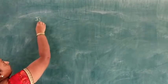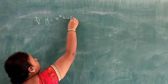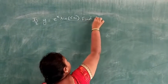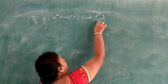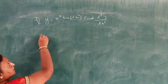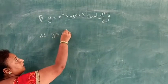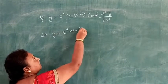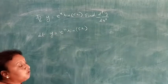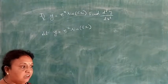Next problem: if y equals 2 e to the power x into sin 5x, find d squared y by dx squared. The given function y equals 2 e to the power x into sin 5x is a product of two functions — first function e to the power x, second function sin 5x.